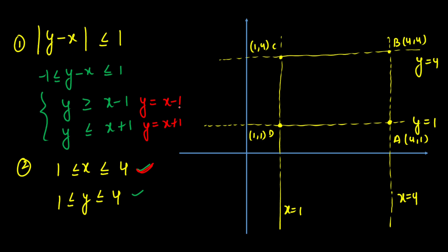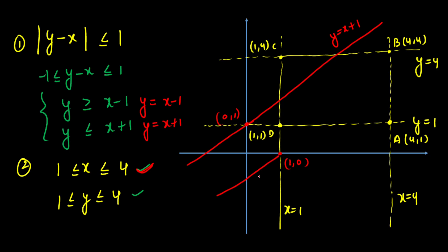To get the favorable cases, we draw the two lines. Y = X + 1 passes through (0,1) and goes diagonally. Y = X - 1 passes through (1,0) and goes similarly. Both are parallel lines with slope 1.